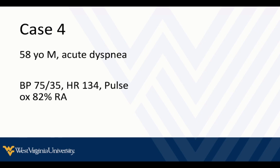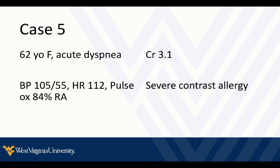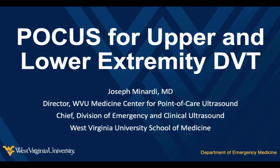A 58-year-old male presents with shortness of breath, looks kind of sick — hypotensive, tachycardic, and hypoxic. And a 62-year-old female is acutely short of breath: blood pressure is pretty good, heart rate is a little on the high side at 112, somewhat hypoxic on room air at 84%. Confounding factors include a creatinine of 3.1 and a severe IV contrast allergy. With those cases as an introduction, let's talk about point of care ultrasound for upper and lower extremity DVT.